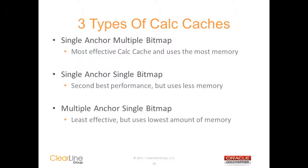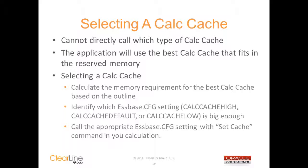S-Base will use one of three types of calc caches when it's aggregating the cube. The single anchor multiple bitmap is the best calc cache, but it also needs the most memory. The single anchor single bitmap is a little less effective but requires less memory. And the multiple anchor single bitmap is the least effective calc cache but also requires the smallest amount of memory. Unfortunately, there is no way to directly select the type of calc cache you're going to use — the application will simply use the best of the three types that fits into the reserved memory being called from the configuration file by the set line in your calculation.